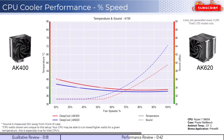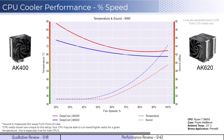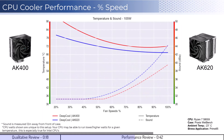As we increase the watts to 105, which is what the CPU is rated for, we can see that the AK620 cooler has materially better cooling performance at lower RPMs, but this benefit diminishes as the fans increase to 100% fan speed. Additionally, when considering sound, the AK620 is noticeably louder at higher RPMs.